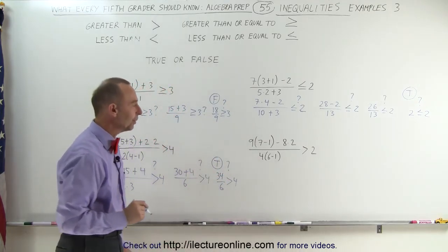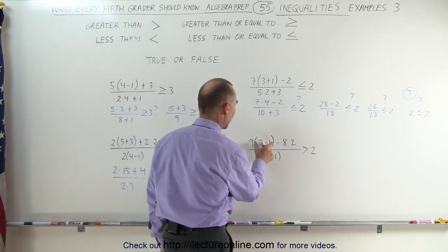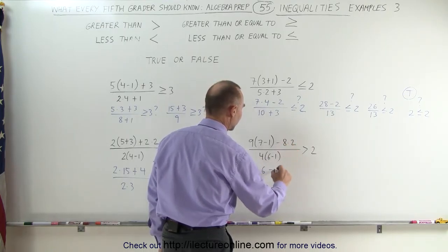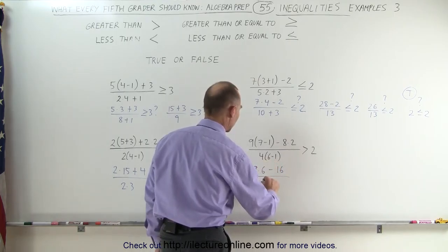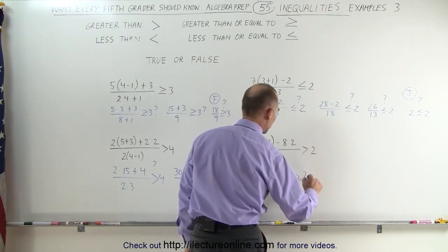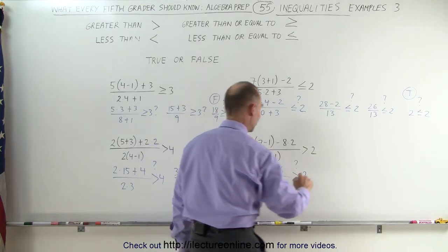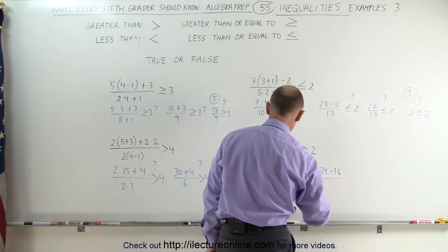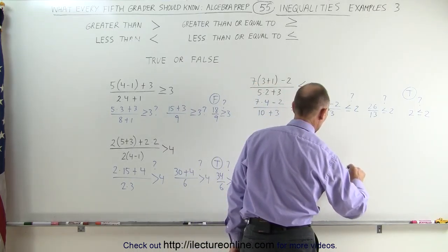Finally, our last example: 9 times (7 minus 1). We work out what's in the parentheses first, giving us 9 times 6, minus 8 times 2 which is 16, divided by 4 times (6 minus 1 which is 5). Is that greater than 2? Continuing, 9 times 6 is 54, so we get 54 minus 16, divided by 4 times 5 which is 20. Is that greater than 2?